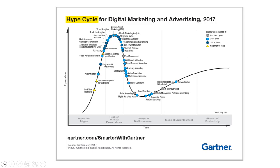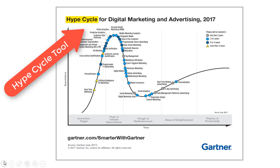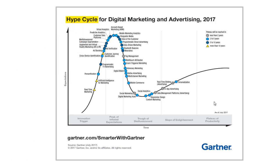To help with these decisions, Gartner introduced a tool a few years ago called the hype cycle. It is widely used in many organizations to drive their technology strategy and investment decisions. The hype cycle, as we can see here, is a graphical representation of how various technologies progress from conception to eventually becoming mainstream.